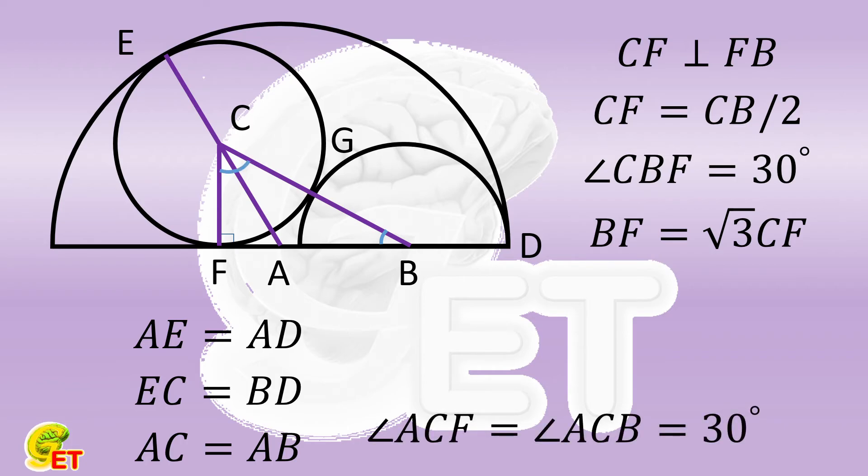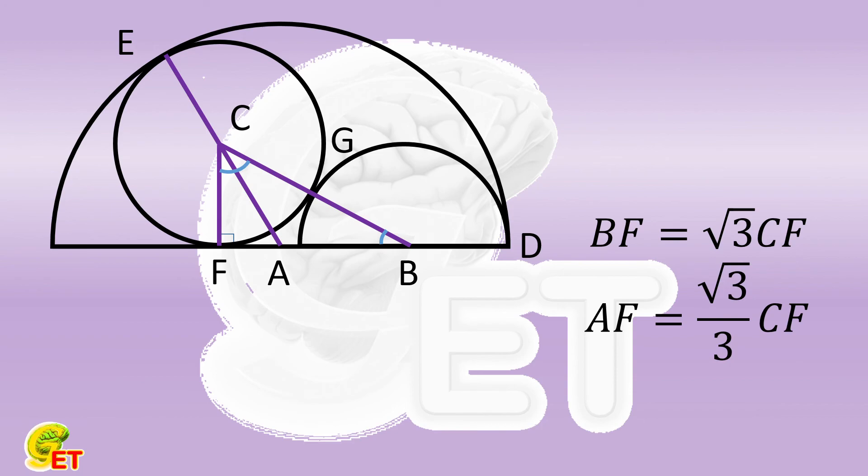The angle ACF is 60 degrees minus 30 degrees, which is also 30 degrees. In this case, triangle ACF is also a right triangle with an acute angle equal to 30 degrees. AF is one-third of square root of 3 times CF.